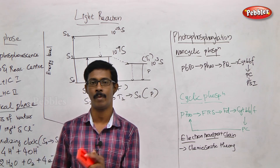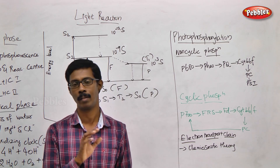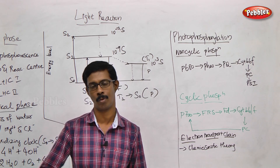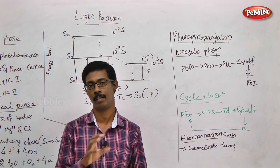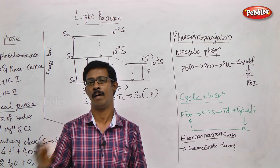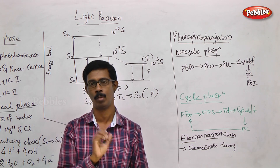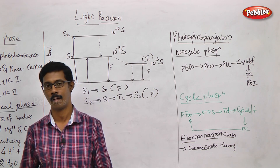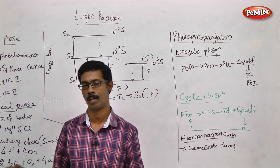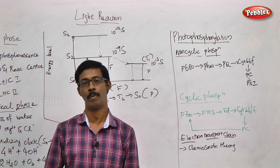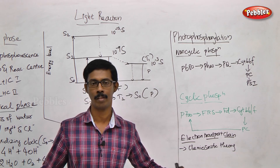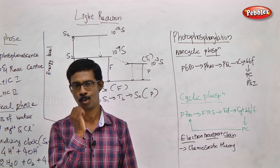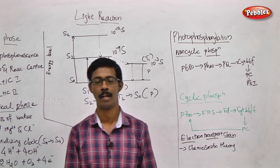In the dark reaction phase, carbon dioxide is fixed. In the dark reaction, carbon dioxide and hydrogen atoms are added, and sugar is produced in the plant. NADPH provides electrons and hydrogen atoms, and ATP provides energy. This is the entire process of photosynthesis. In our discussion, we start with the light reaction.